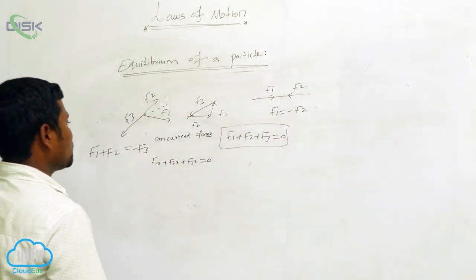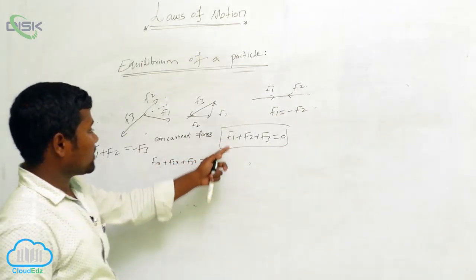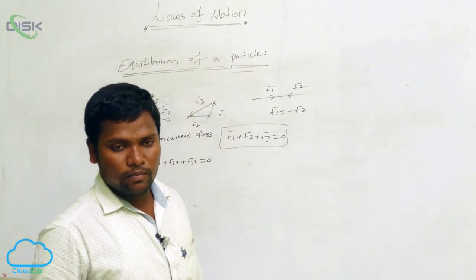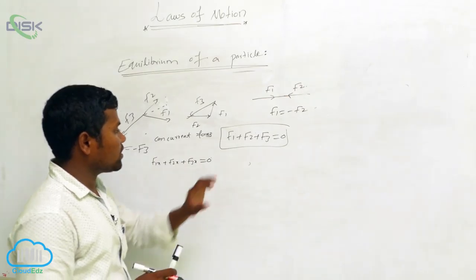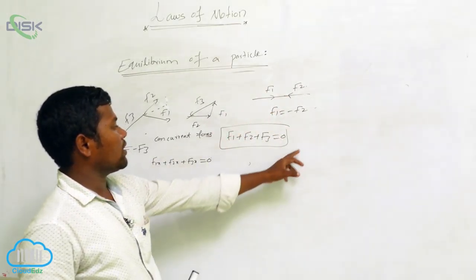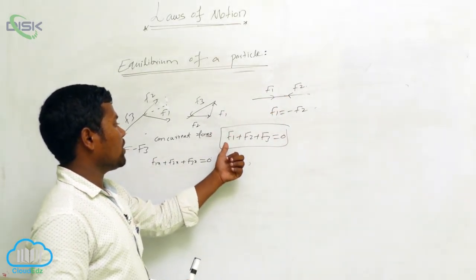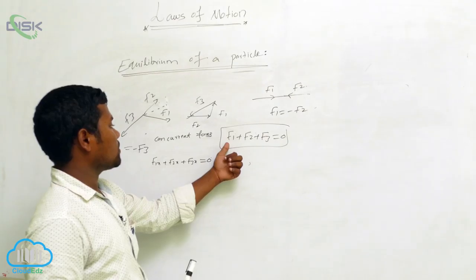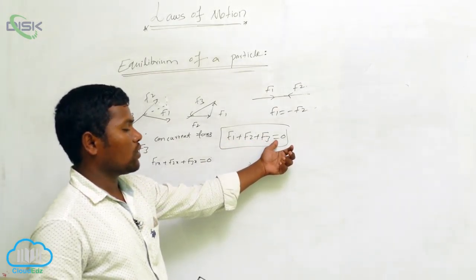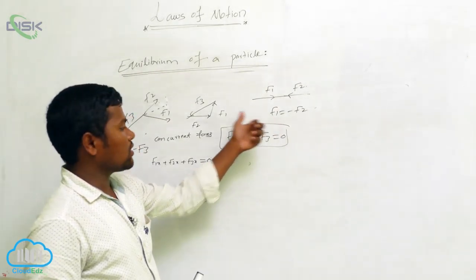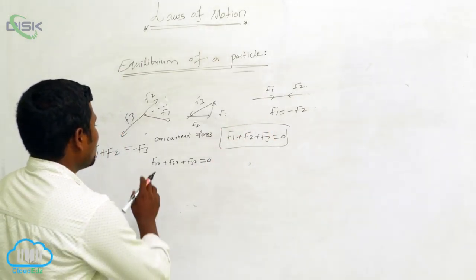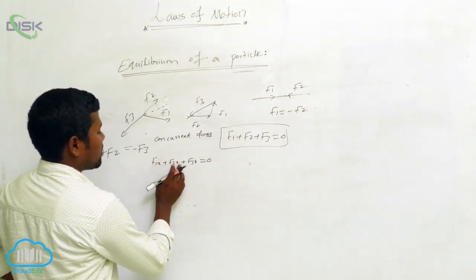In this case, F1 plus F2 plus F3 is equal to 0, because they are coming back. If there is no net force — if the net force is 0 — then we can say all are in the equilibrium position. F1 plus F2 plus F3 equals 0 means all are in equilibrium.